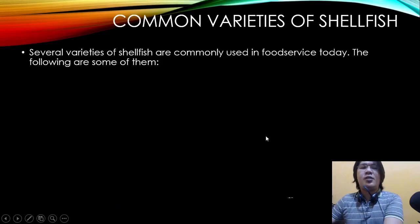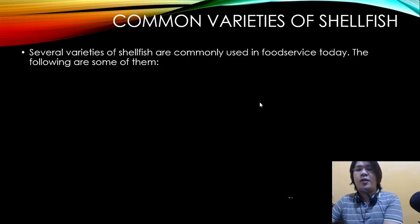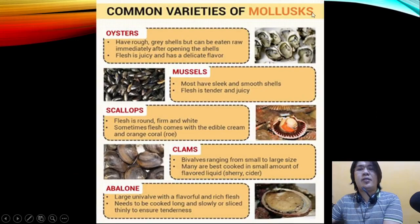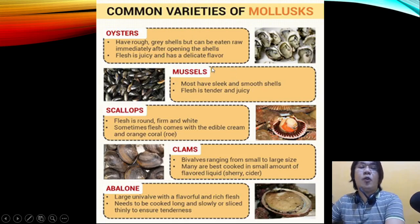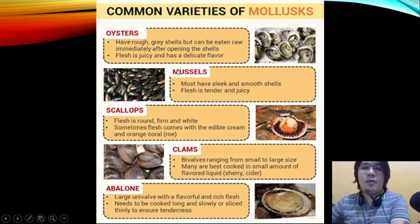There are several common varieties of shellfish used in food service today. Common varieties of mollusks include oysters, mussels, scallops, clams, and abalone. Oysters have a rough gray shell and can be eaten raw immediately after opening; the flesh is juicy and has a delicate flavor. Mussels have sleek and smooth shells with tender and juicy flesh.